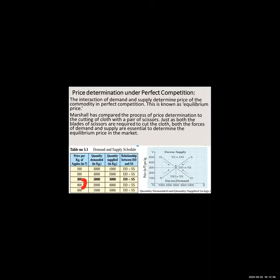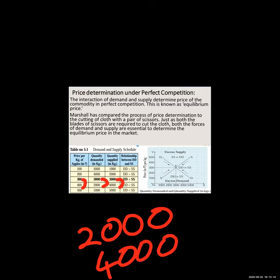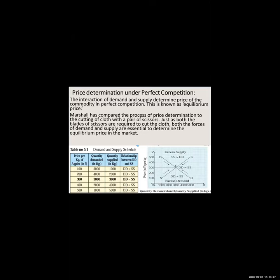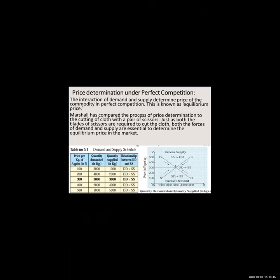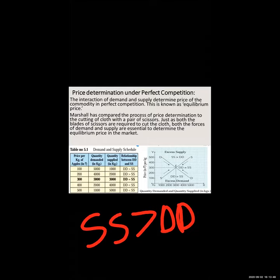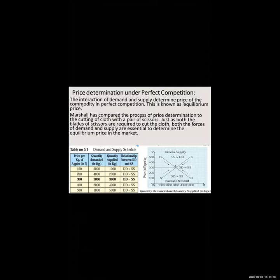Moving ahead: when price rises from 300 to 400, quantity demanded decreases from 3,000 to 2,000 and quantity supplied increases from 3,000 to 4,000. Here, demand is less than quantity supplied — DD is less than SS. Furthermore, when price increases further, quantity demanded reduces to 1,000 and quantity supplied increases to 5,000. Here also demand is less than supply — or in other words, supply is more than demand. Then you have to draw the diagram.